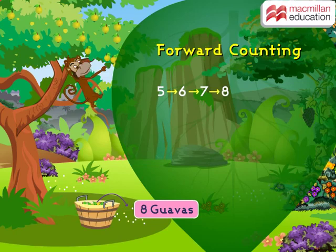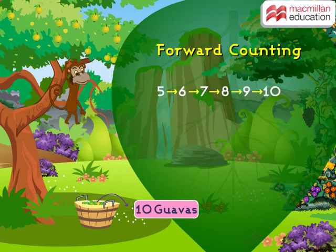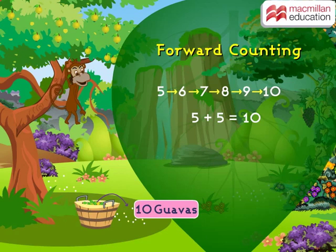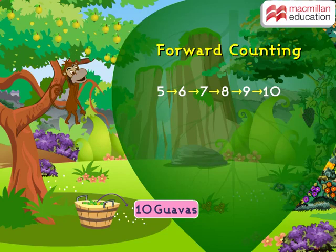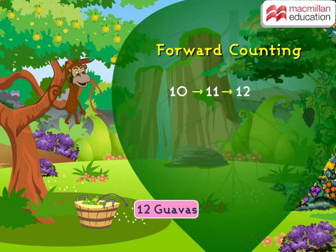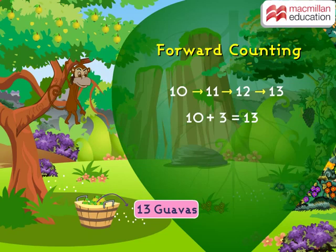Seeing a lot more guavas on the tree, Kiki wants more and starts picking. He picked five more guavas to get a total of ten guavas. Wow! Kiki suddenly remembers that his best buddy likes eating guavas too, so he moves forward to collect more. Poor Kiki — he could only move three more times as there was no space left in the basket.